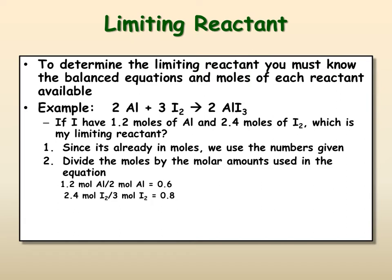And once we have things in moles, you divide your moles by the molar amounts used in the equation. Those are your prefixes in your balanced equation. So, 1.2 moles of aluminum divided by the 2 moles required by the reaction gives you 0.6 ratio. And then the 2.4 moles of I2 divided by the 3 moles used up by the reaction gives you 0.8, which means you have, in a ratio, more iodine than aluminum, which is going to make aluminum your limiting reactant.